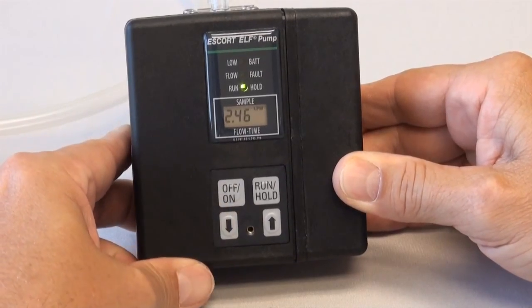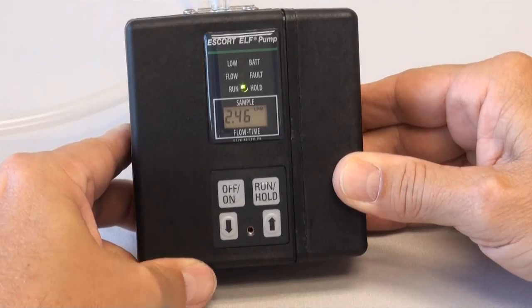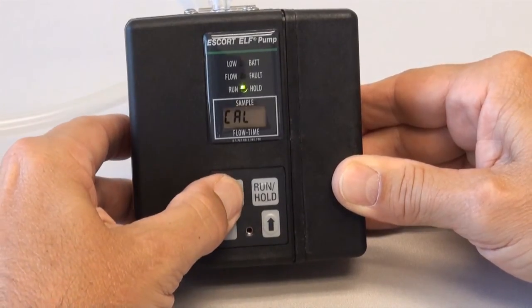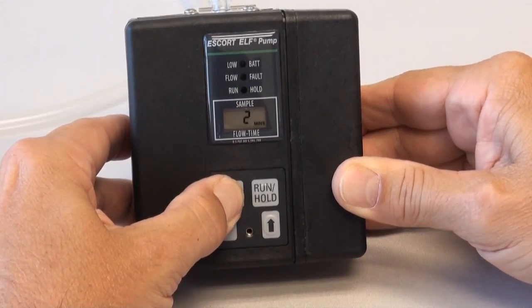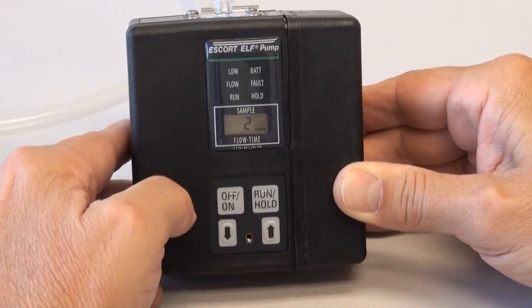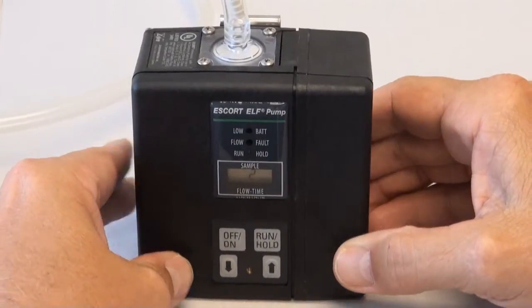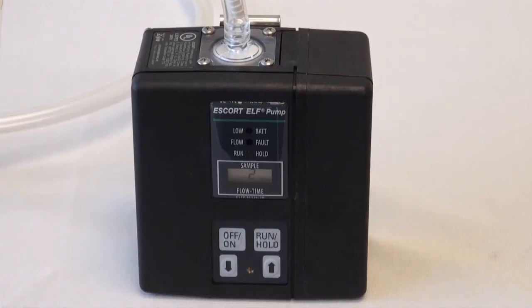The Escort Elf is now calibrated. Because the Escort Elf has an internal secondary calibration, the pump will only need to be calibrated to a primary standard once a month. Or, for coal mine dust sampling, MSHA requires recalibration every 200 hours.